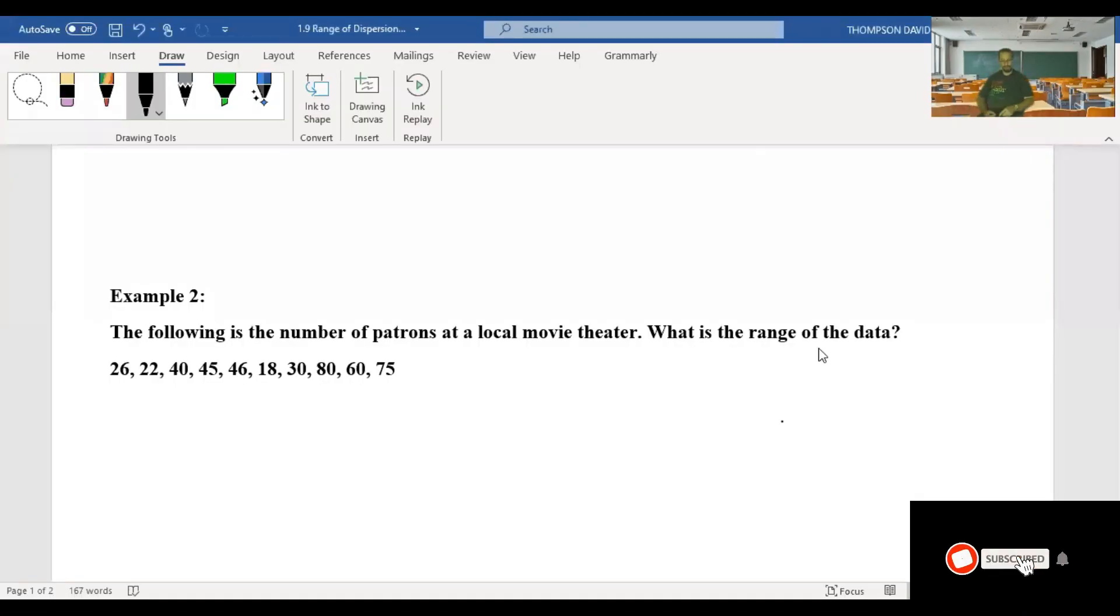Example two. The following is the number of patrons at a local movie theater. What is the range of data? So first we need to find our largest number, which again we'll highlight in yellow. And it looks like our largest number is 80.